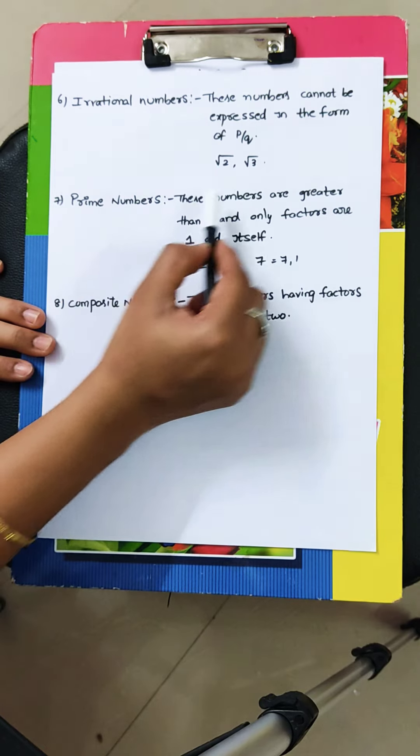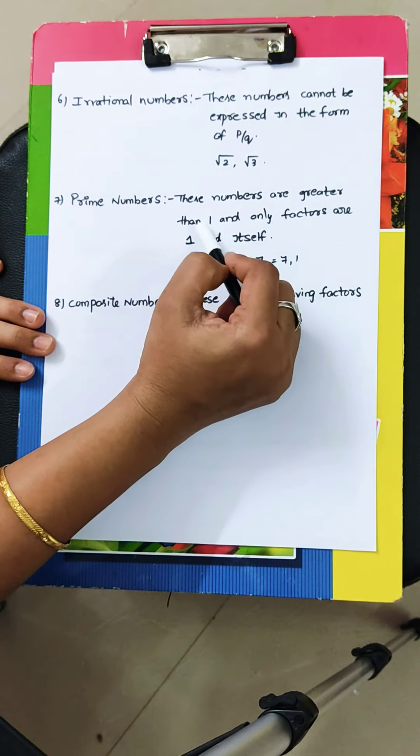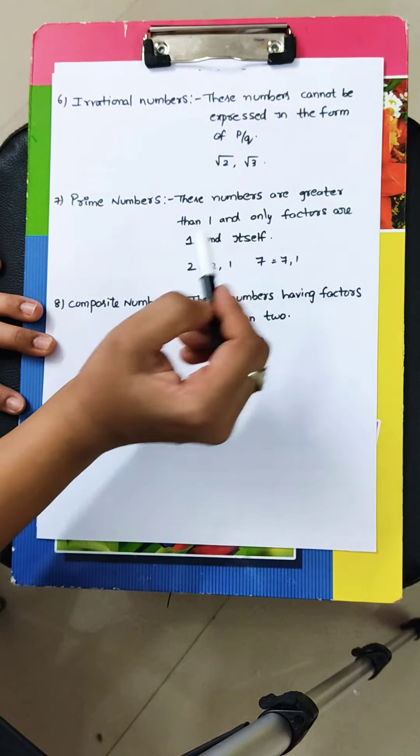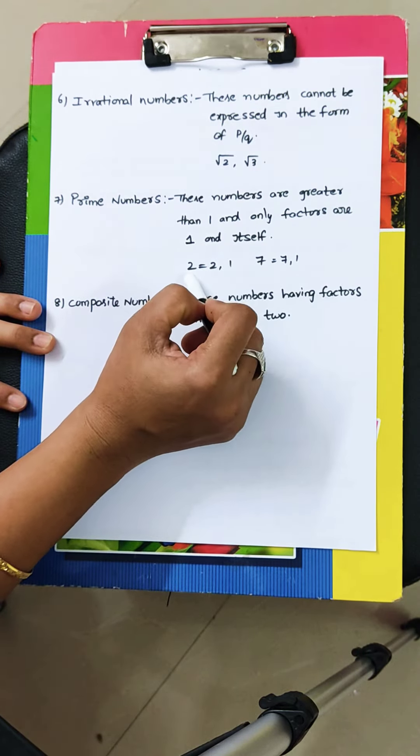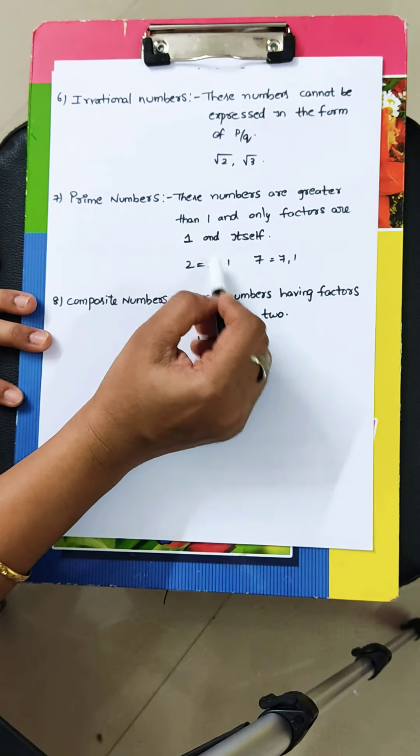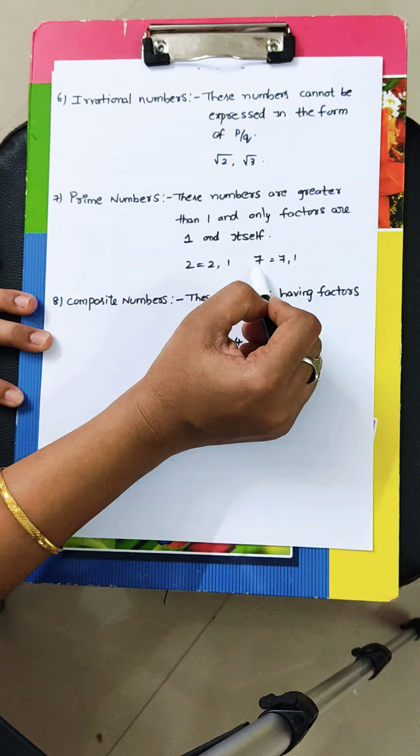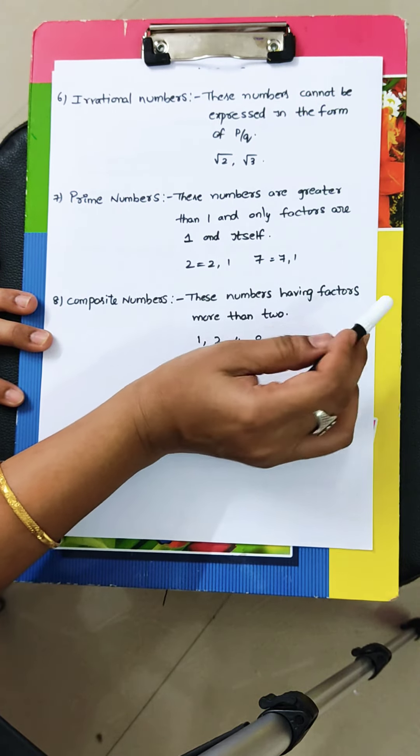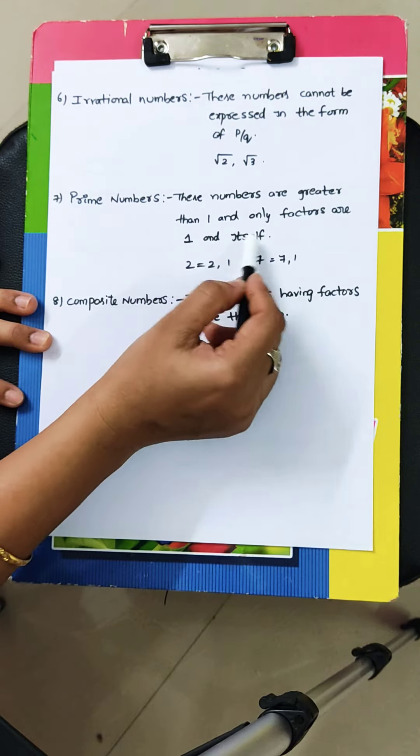Prime numbers. These numbers are greater than 1 and only factors are 1 and itself. 1 and itself in the sense, if you take 2, it will go on 2 table and 1 table only, not in any table. 7 also, it will go with 7 table, 1 table, not with any table. So, that's why 1 and itself.